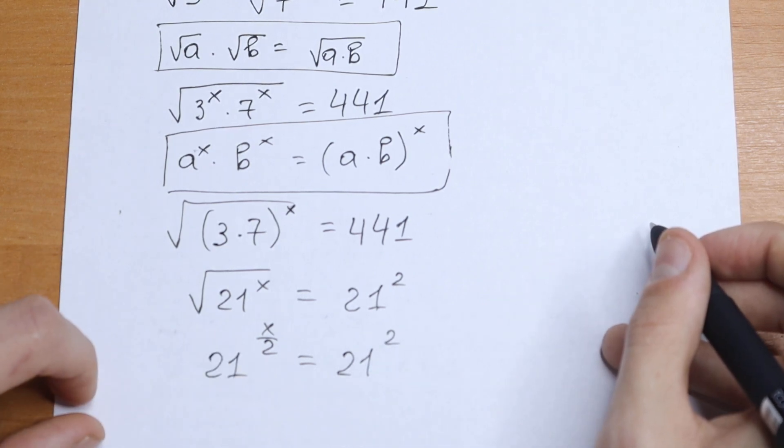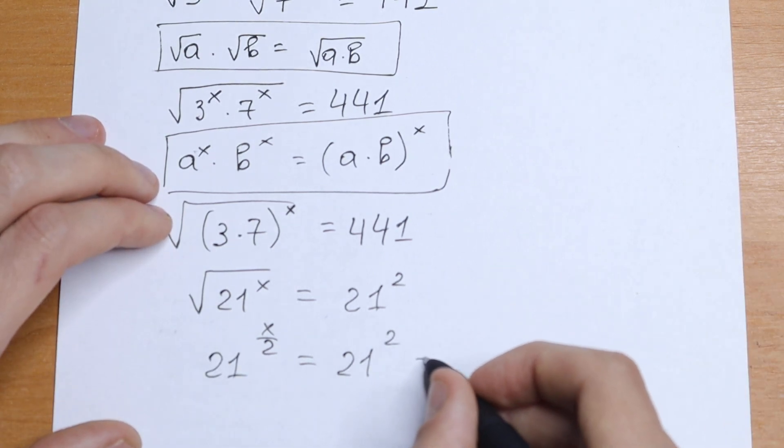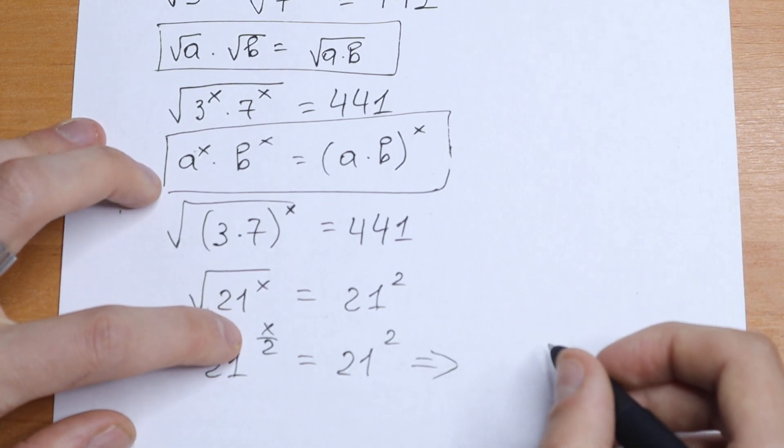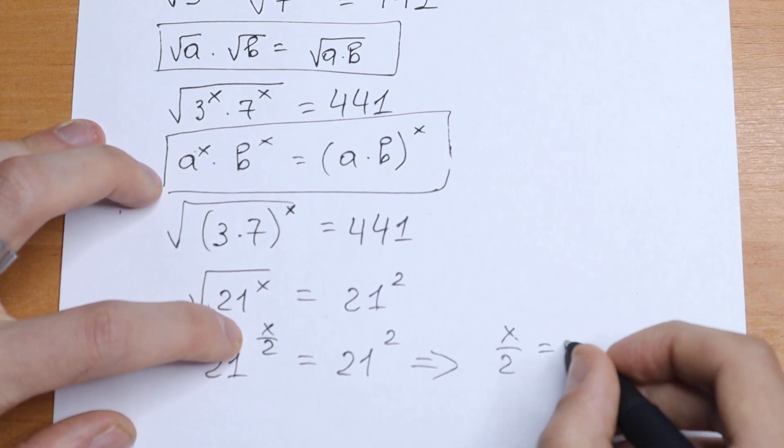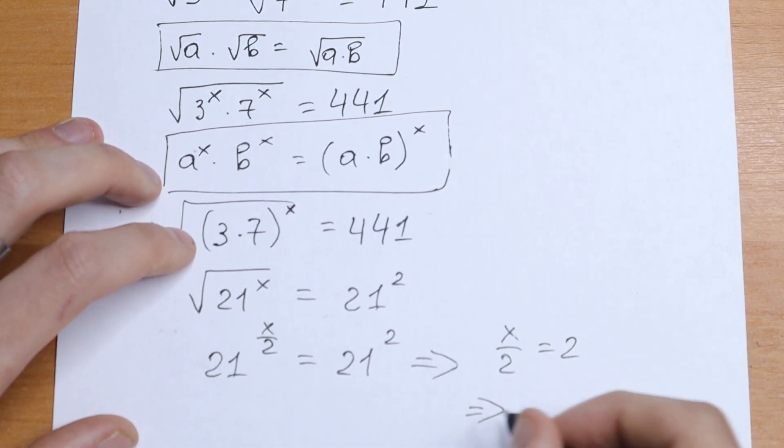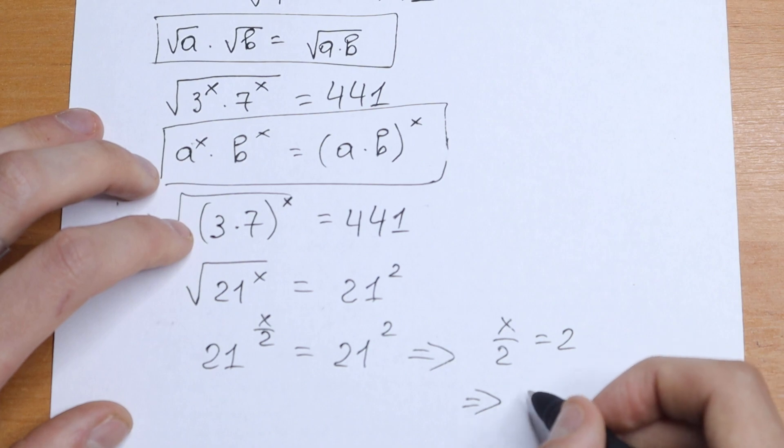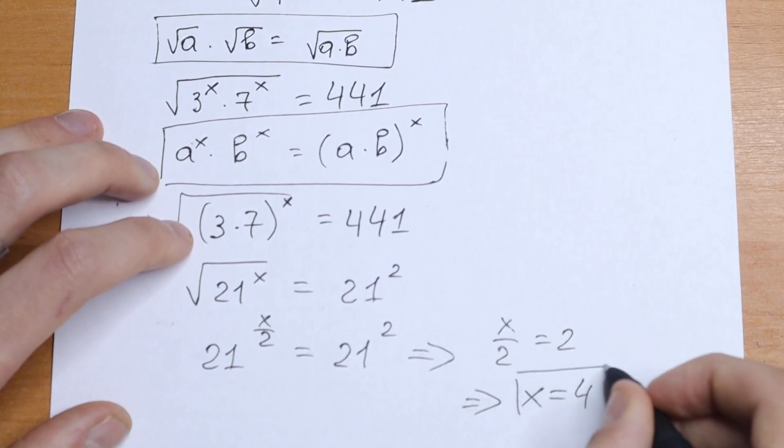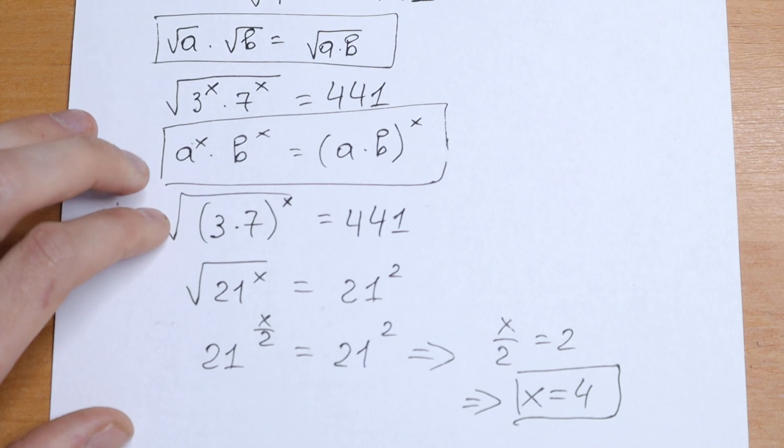We have the same basis. So we can write an equation with our exponent. We will have x over 2 equal to 2. And from here multiplying both sides by 2, we will have that our x equal to 4. And this will be our answer.